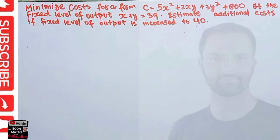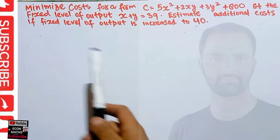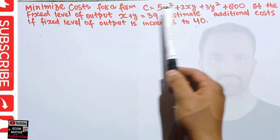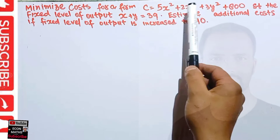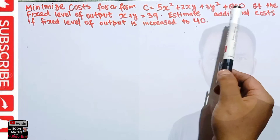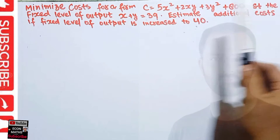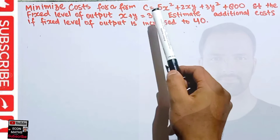Hi, this is Halal in the studio on the Mathematical Economics series. We will try to solve another question asked by Ipamo Joseph on the Telegram channel regarding an optimization problem. The question is: minimize cost for a firm. We are given the cost function C = 5x² + 2xy + 3y² + 800, subject to the fixed level of output x + y = 39.